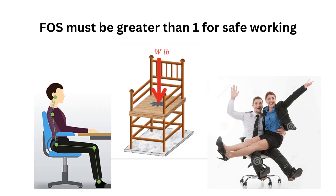Take the example of a chair. Generally one person is sitting on the chair, and the average weight of a person is around 70 to 80 kg. But when designing the chair, we design it in such a way that even if two persons sit on it, the chair will sustain the load — meaning it can sustain 140 to 160 kg. For the chair, the factor of safety would be two, because we have designed it with double capacity.